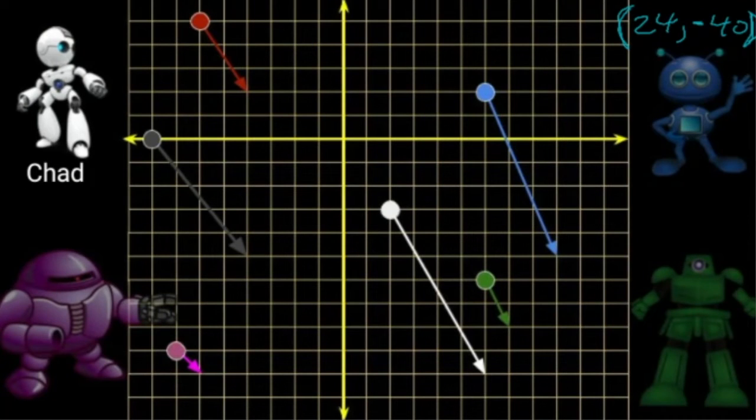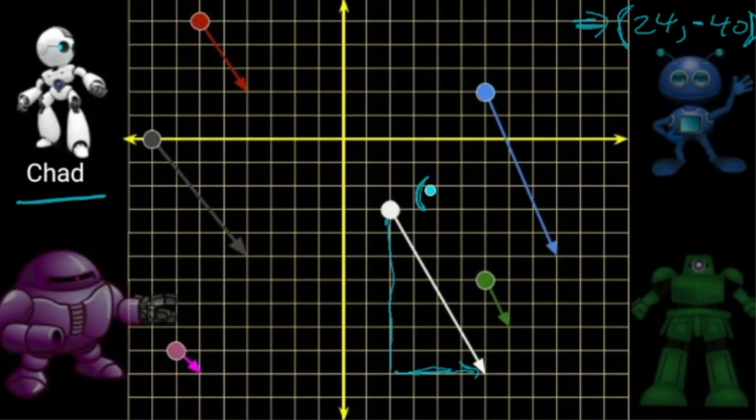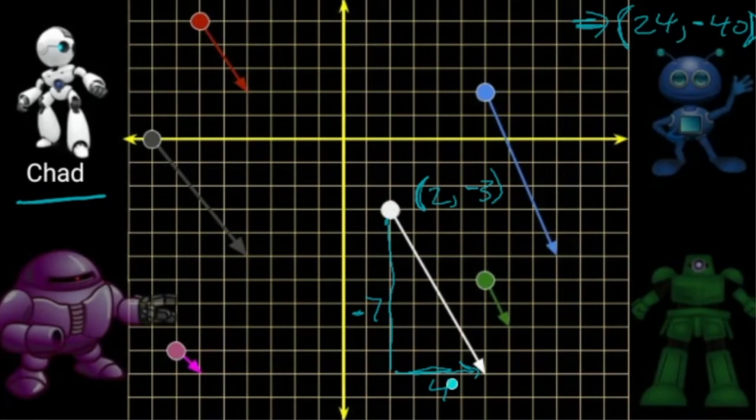If they hit it, they're in. If they miss, they get cut from the roster. So let's start with Chad right here. Chad's starting at a position of 2, negative 3 and firing along a trajectory of negative 7 over 4.